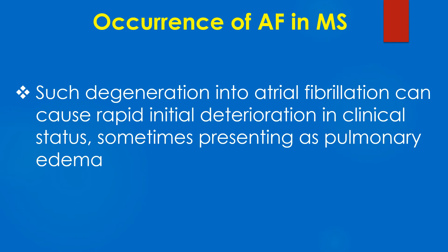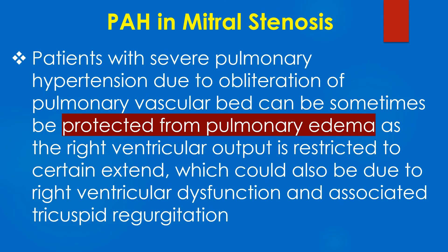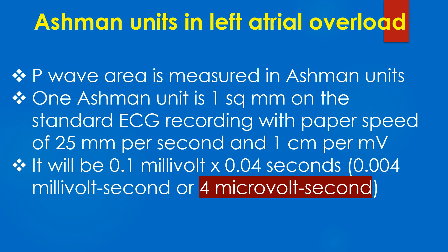Such degeneration into atrial fibrillation can cause rapid initial deterioration in clinical status, sometimes presenting as pulmonary edema. Patients with severe pulmonary hypertension due to obliteration of the pulmonary vascular bed can sometimes be protected from pulmonary edema, as the right ventricular output is restricted to a certain extent, which could also be due to right ventricular dysfunction and associated tricuspid regurgitation.